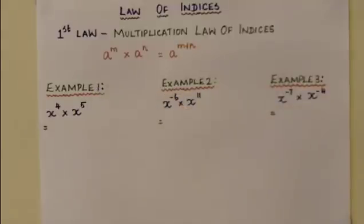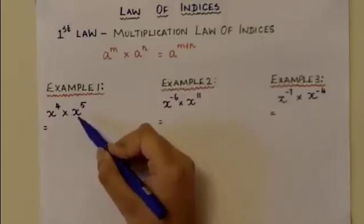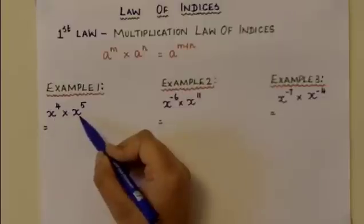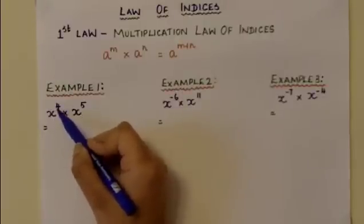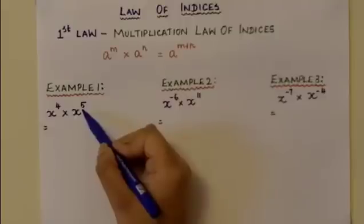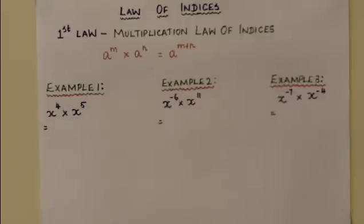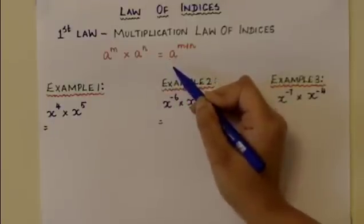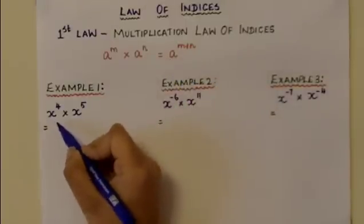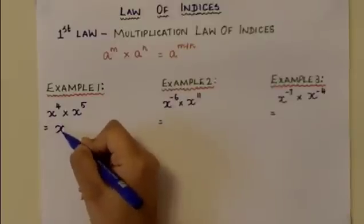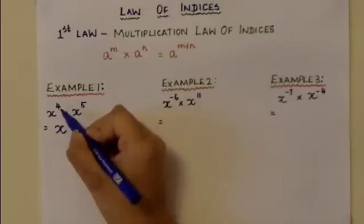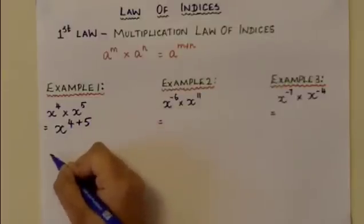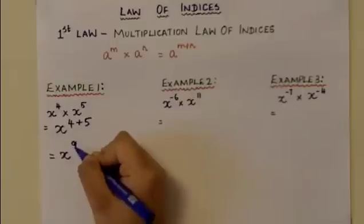Looking at the first example, we have x to the power of 4 times x to the power of 5, where it is the same variable multiplied together but the powers are different. To simplify, we apply the multiplication law of indices: the powers are added, giving 4 plus 5, which equals x to the power of 9.